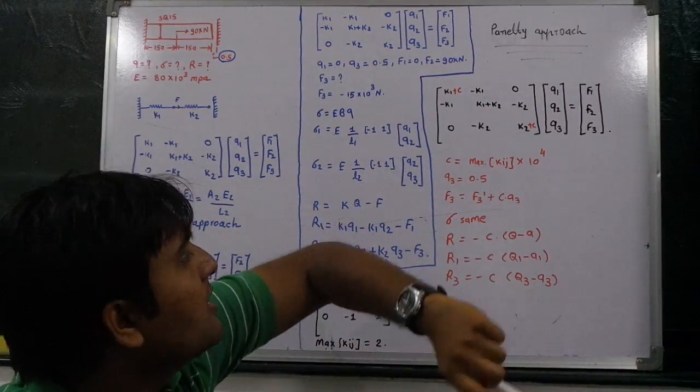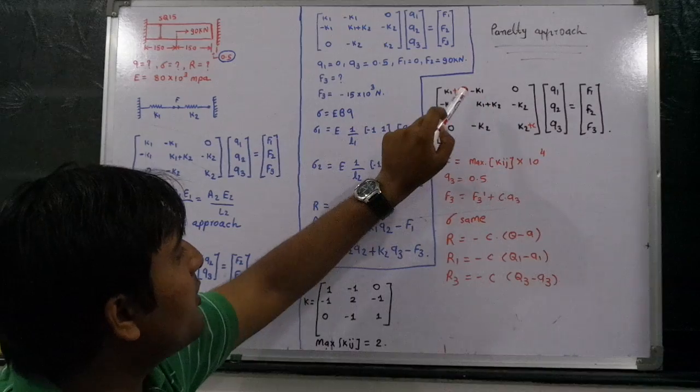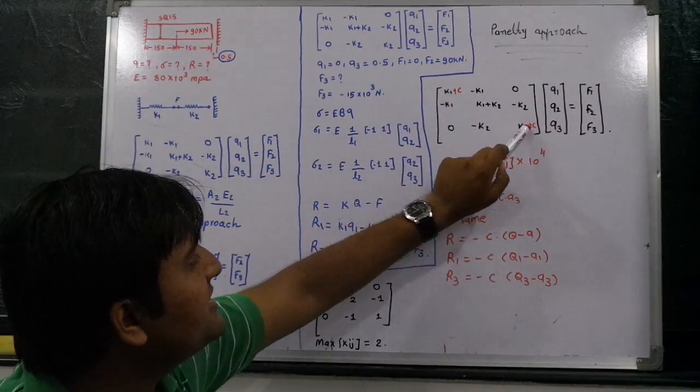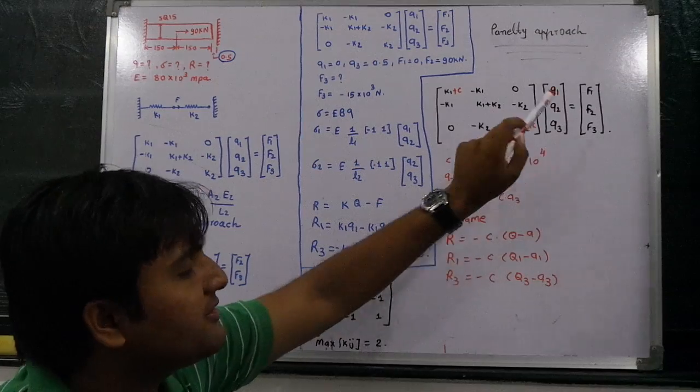Now, let's discuss about the penalty approach. The main difference in the penalty approach: the stiffness matrix remains the same, only thing is we need to add C here. And C is equal to maximum Kij multiplied by 10 raised to 4.